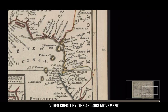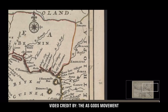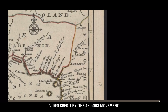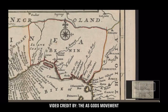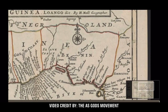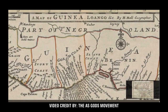You see this right here — this says Ethiopia. So guess where Negroland is located? In Ethiopia.